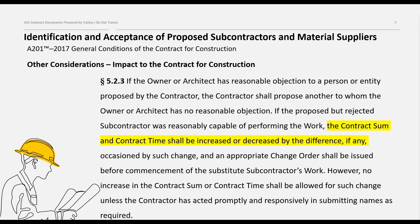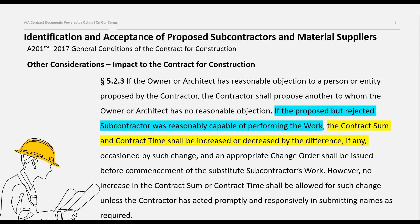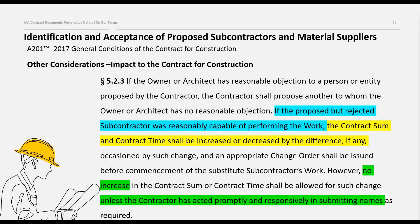Then, Section 5.2.3 recognizes that a replacement subcontractor may not be able to perform the work for the same price and within the same time schedule as the subcontractor rejected by the owner and architect. Because of this, the contractor is entitled to a change order to reflect any changes in the contract sum or the contract time. However, it's important to note that this entitlement is conditioned upon whether the rejected subcontractor was reasonably capable of performing the work and the contractor does not delay in proposing another subcontractor to whom the owner and architect has no reasonable objection.